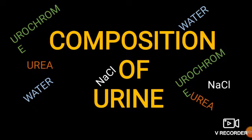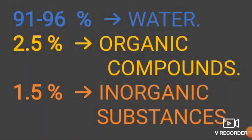Today we are going to learn about the composition of urine. Urine is mainly composed of about 91 to 96 percent water, about 2.5 percent organic compounds, and 1.5 percent inorganic substances.